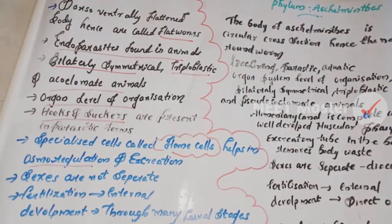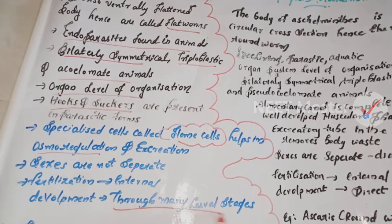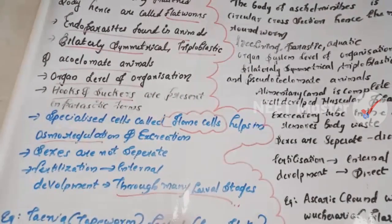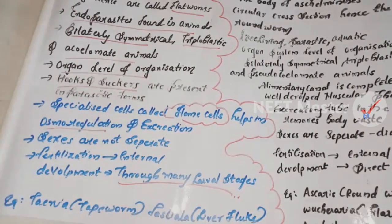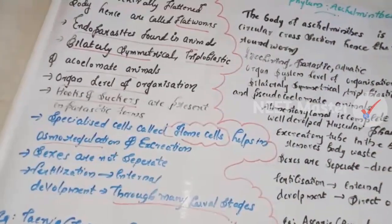Flame cells assist in both osmoregulation and excretion. Sexes are not separate — platyhelminthes are hermaphrodites. Fertilization occurs internally. Development is indirect, involving larval stages. Examples include tapeworm, Fasciola (liver fluke).